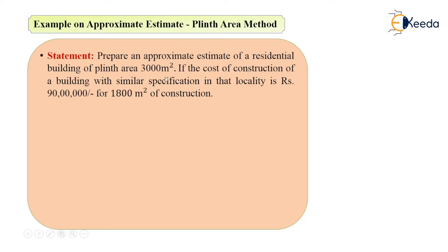They have given the plinth area of the proposed building, which is the residential one — 3000 meter square. Now there is one building in the same locality whose area is 1800 meter square and the cost of that building is Rs 90 lakh.